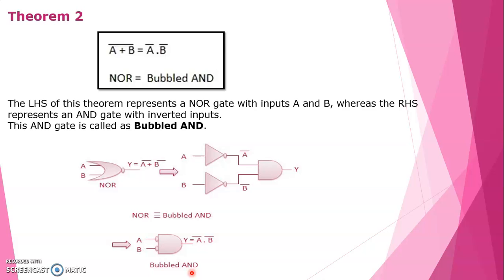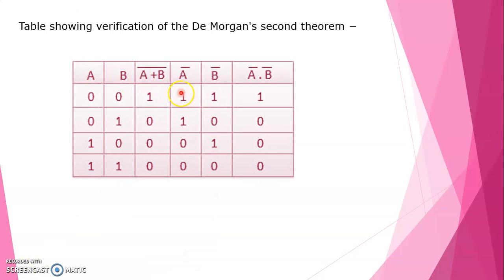The overall calculation will be covered in the next session and the live session. The table for theorem 2 includes: AB values, A plus B bar values, A bar·B bar values, and A bar into B bar values — proving De Morgan's second theorem.